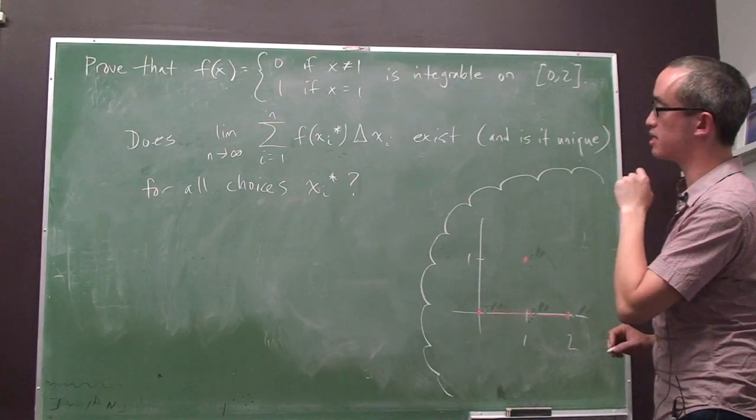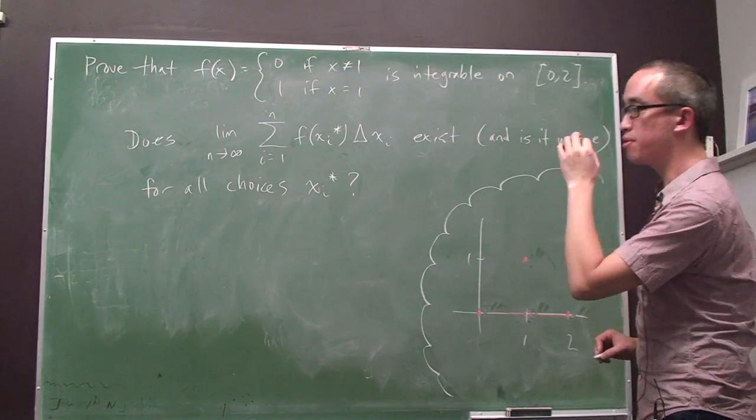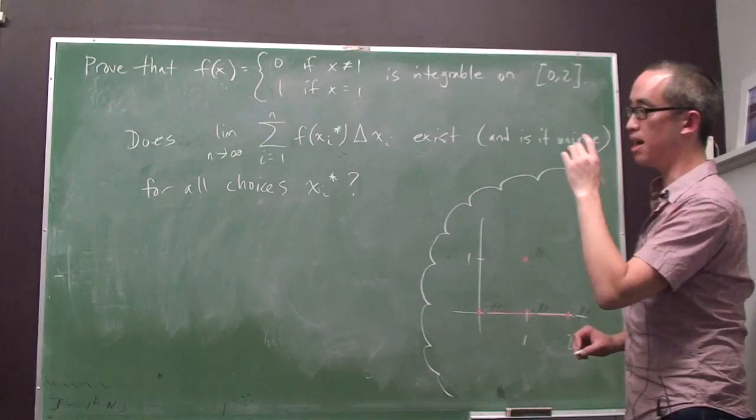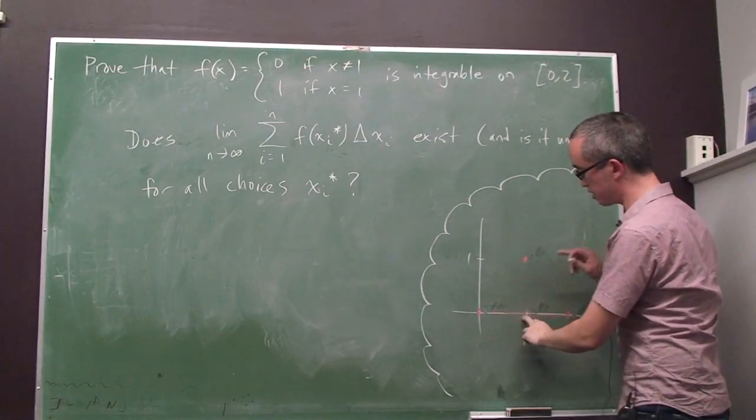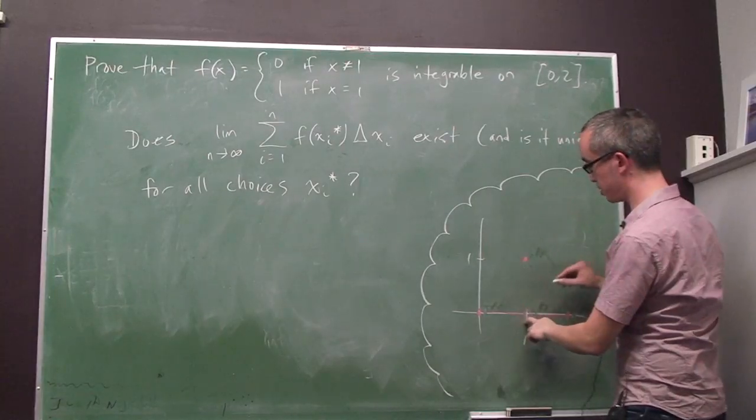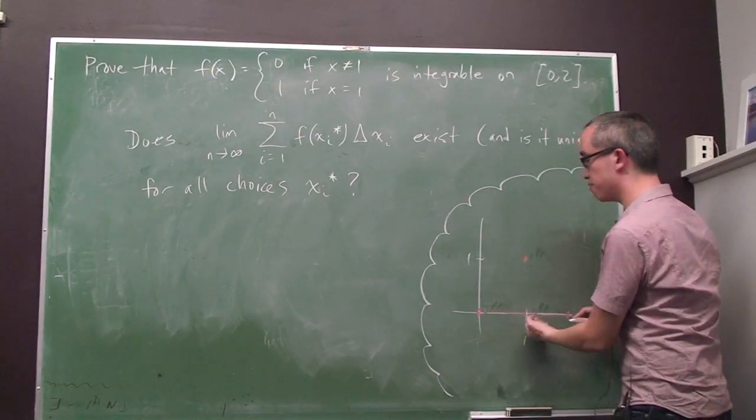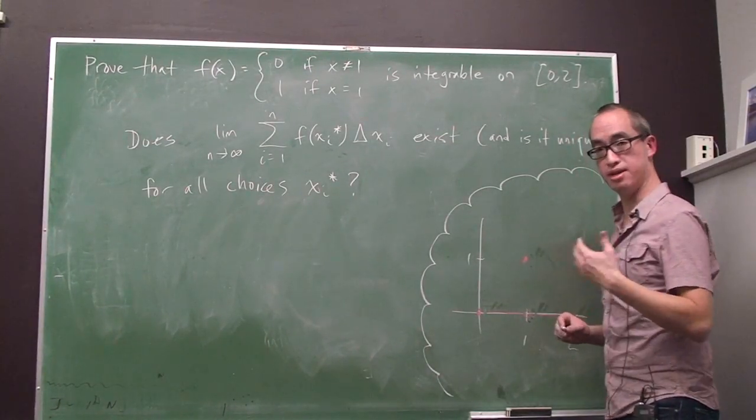So I think we can actually claim that this is equal to 0. And we can prove that it's equal to 0 by making the subinterval small enough that the contribution, the possible contribution from the subinterval including the point 1, is negligible.